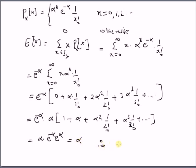Therefore, the mean, that is the expectation of the Poisson random variable, equals α, the parameter α.